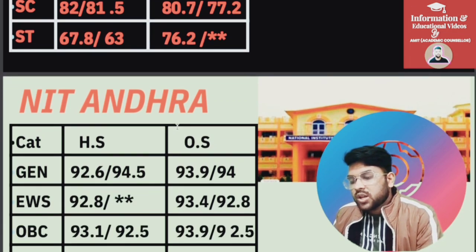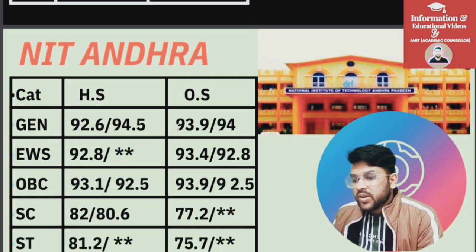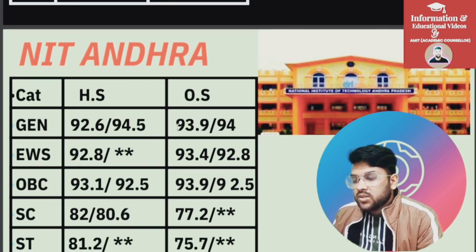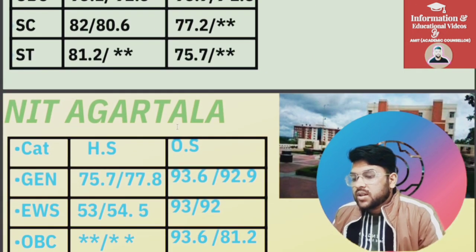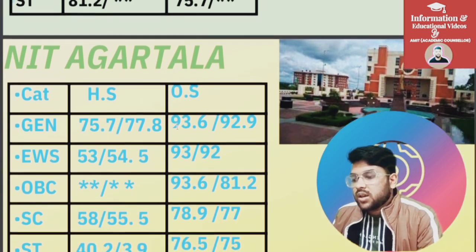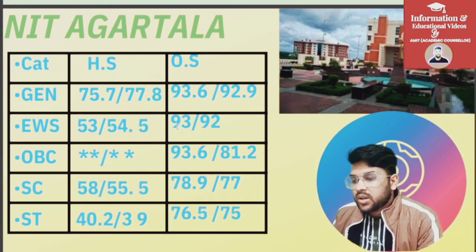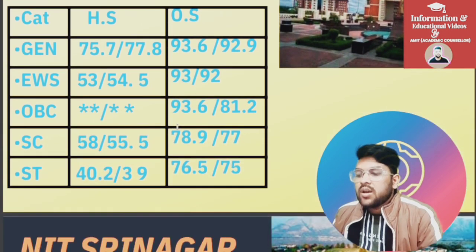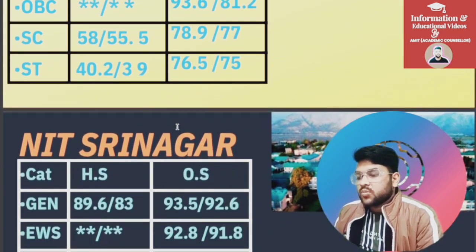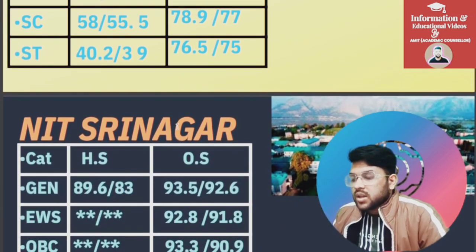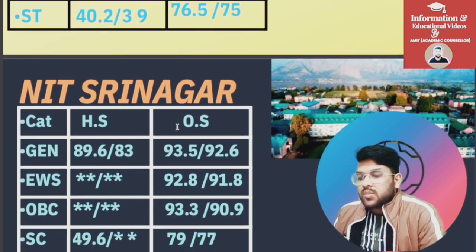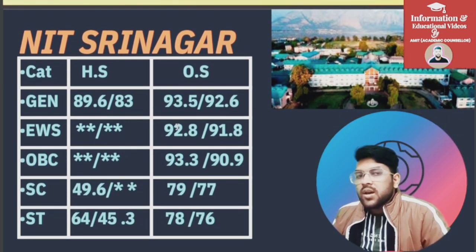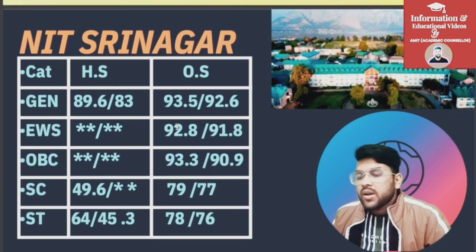For NIT Andhra: General 93.9, EWS 93.4, OBC 93.9, SC 77.2, ST 75.7. For NIT Agartala: General 93.6, EWS 93, OBC 93.6, SC 78.9, ST 76.5 percentile. For NIT Srinagar: General 93.5, EWS 92.8, OBC 93.3, SC 79, ST 78 percentile.